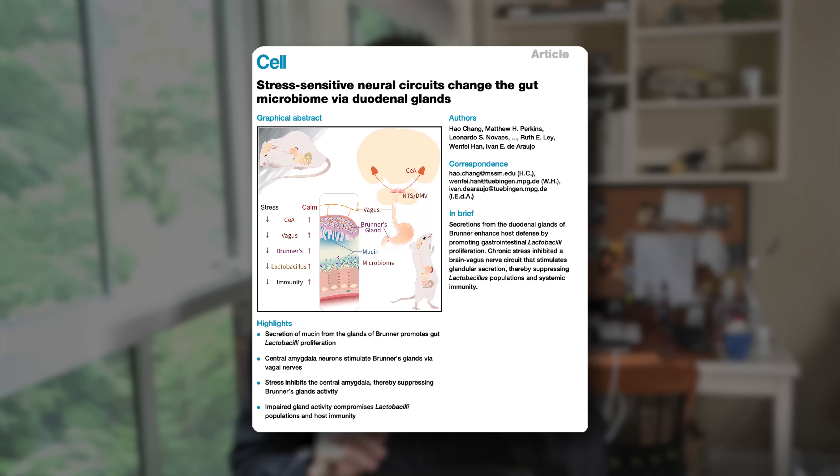Okay, let's get into the data. The paper in question was just published in Cell, one of the top journals in the world, and is entitled 'stress sensitive neural circuits change the gut microbiome via duodenal glands,' the duodenum being part of the small intestine.